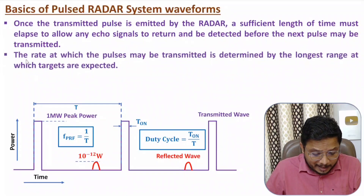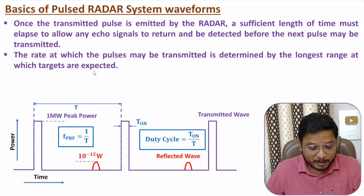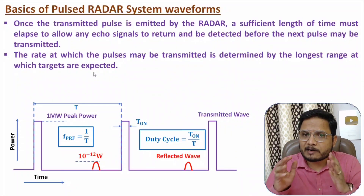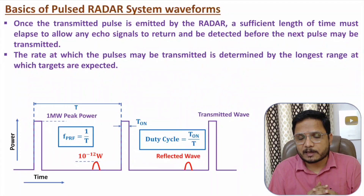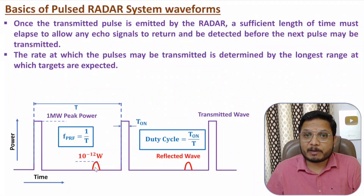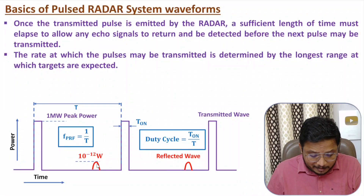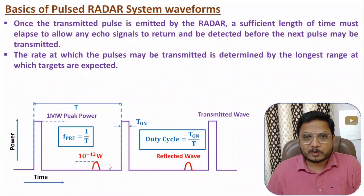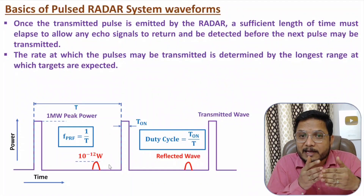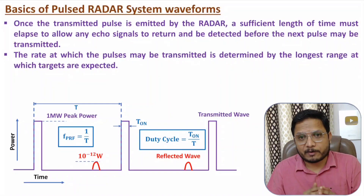The rate at which pulses may be transmitted is determined by the longest range at which targets are expected. Based on targets, we select the pulse repetition frequency. For example, if we are having a reflected wave coming from a 400 kilometer distance, this delay will arrive at a certain point. If that target is at 500 kilometers, then the pulse will arrive even later. So we need to know first what is the expected range of the target, and based on that we should select the pulse repetition frequency.